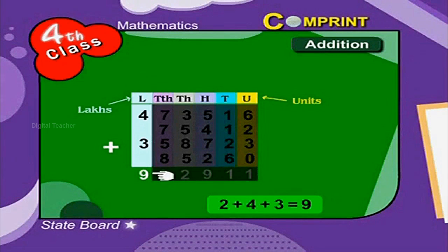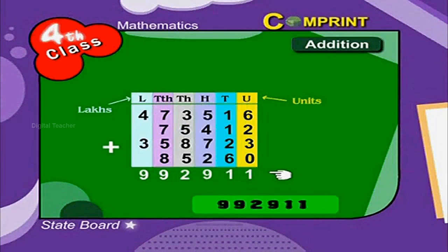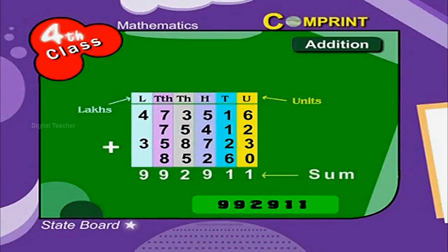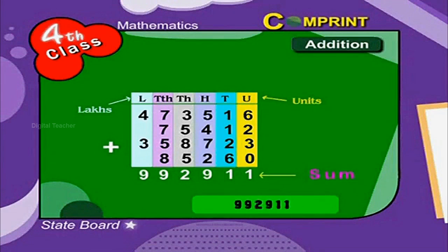Thus the sum is 9,92,911. The answer of an addition is called the sum.